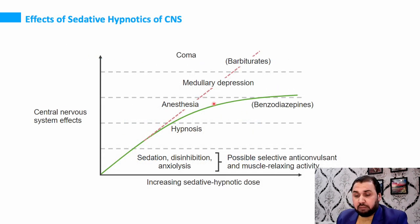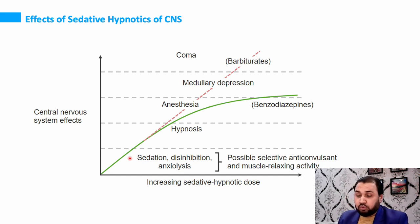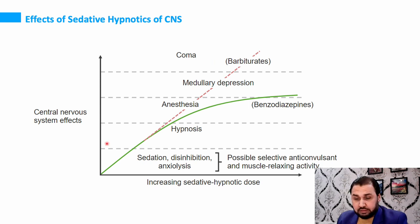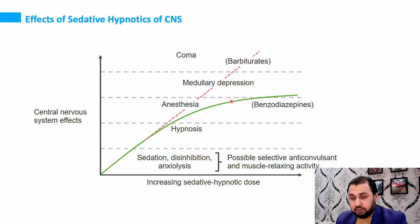Most benzodiazepines and barbiturates produce dose-dependent and duration-dependent effects. As you increase the dose, first there is sedation, then anxiolysis, then hypnosis, then anesthesia, then medullary depression, and finally coma. The more you increase dose, duration, or potency — from benzodiazepines to barbiturates — the greater the CNS effects.